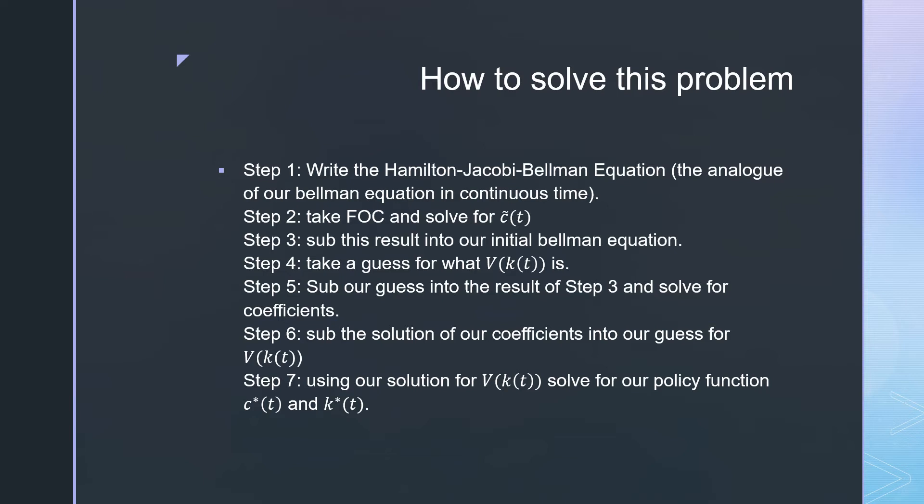Step five: sub our guess into our results from step three and solve for the coefficients. Step six: sub the solution of our coefficients into our guess for our value function V(k,t). Step seven: use our solution for V(k,t) to solve for our policy functions for c*(t) and k*(t).